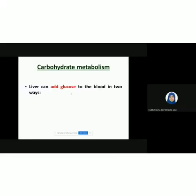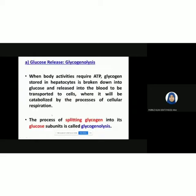The liver can actually add glucose to the blood via two ways. The first one is glycogenolysis, and the second one is gluconeogenesis. So when we go to the first one, glycogenolysis — 'lysis' means breakdown. So they actually break down the glycogen.